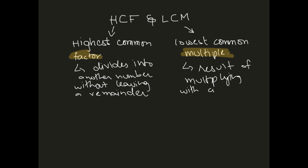For example, 6 times 5 is 30. Six and five are the factors of 30, while 30 is the multiple of six and five, because when you multiply six with five you get 30. When you divide 30 by six you get five with no remainder, and when you divide 30 by five you get six without a remainder.